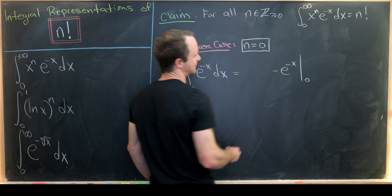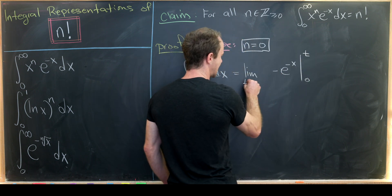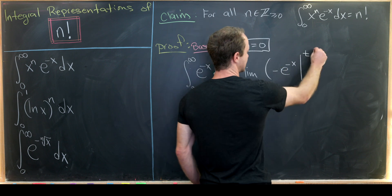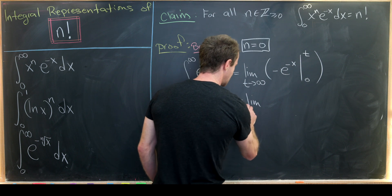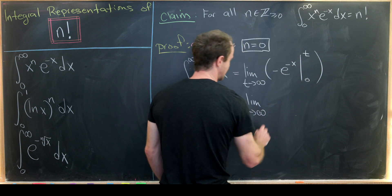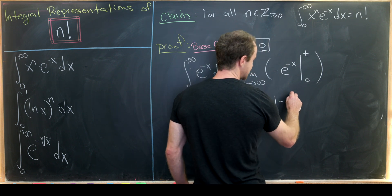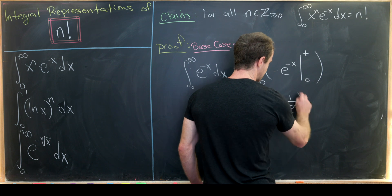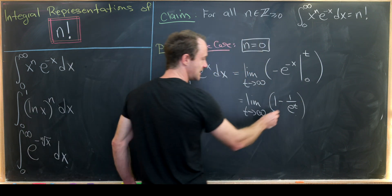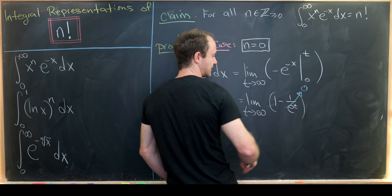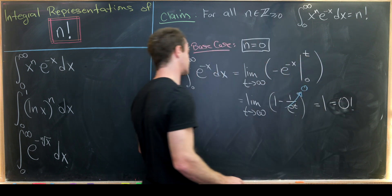Let's be careful and say this is evaluated up to t, then take the limit as t approaches infinity. That means we're computing the limit as t approaches infinity of e to the zero — which is one — minus e to the minus t, which is one over e to the t. As t goes to infinity, this trends toward zero, and we get the whole thing equals one, which is of course zero factorial.